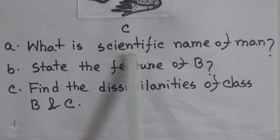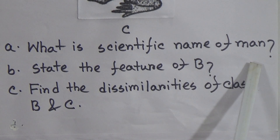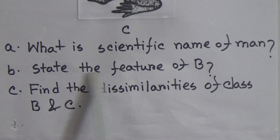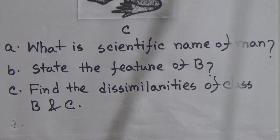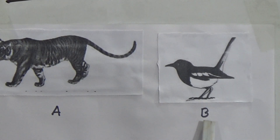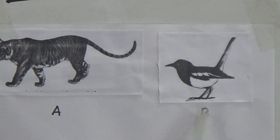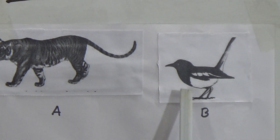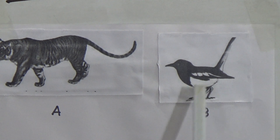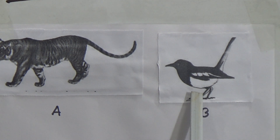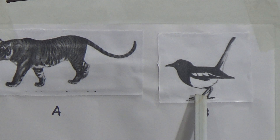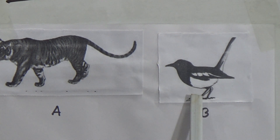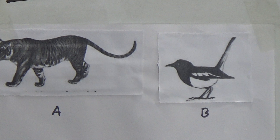Question A: what is the scientific name of man? The scientific name of man is Homo sapiens. Number B: state the features of B. B is under Class Aves. The characteristics of Aves are: body is covered with feathers, they can fly, they have air sacs, their bones are light, strong, and delicate, and they are warm-blooded. You have to write these characteristics for question B.